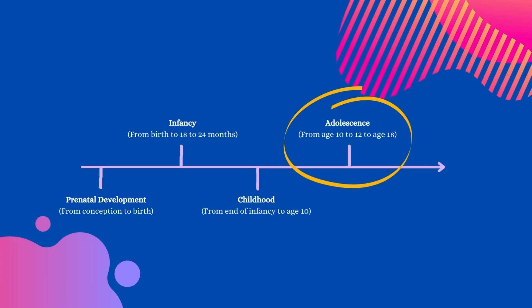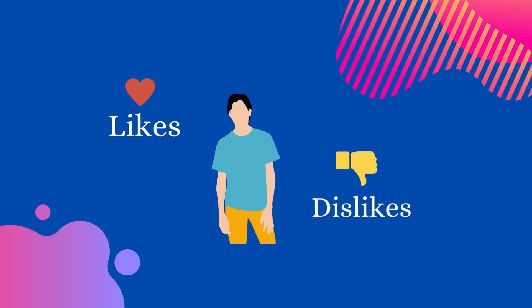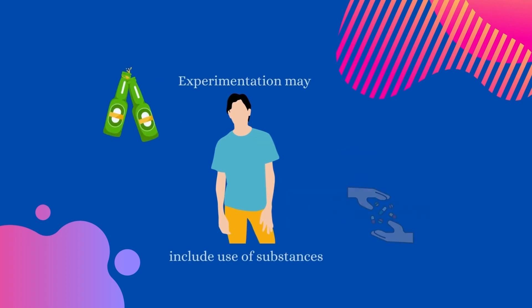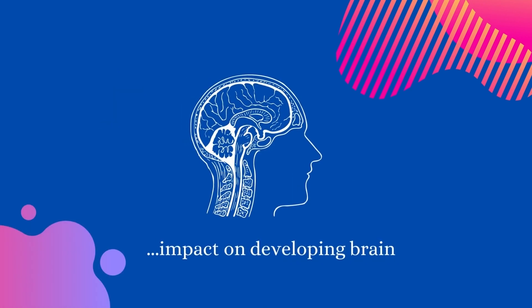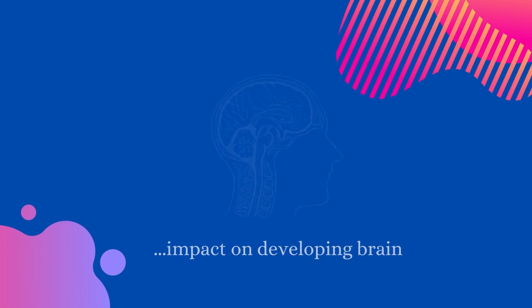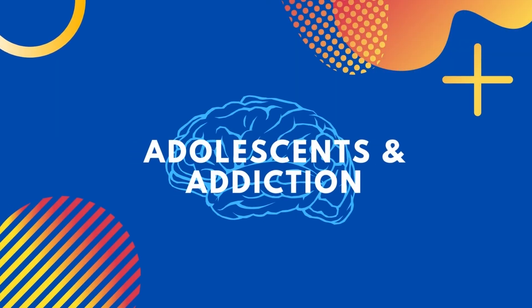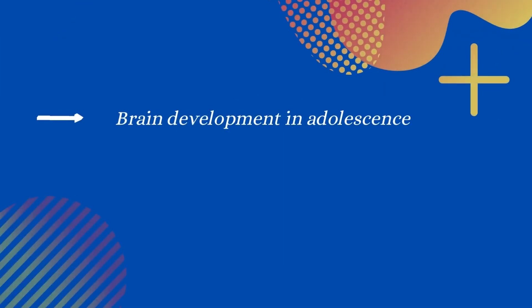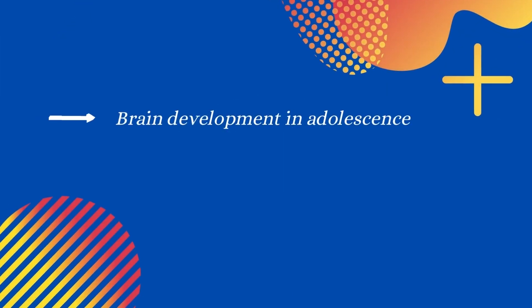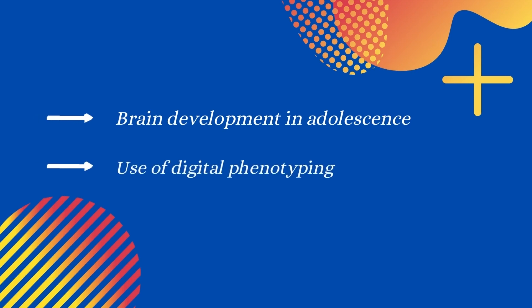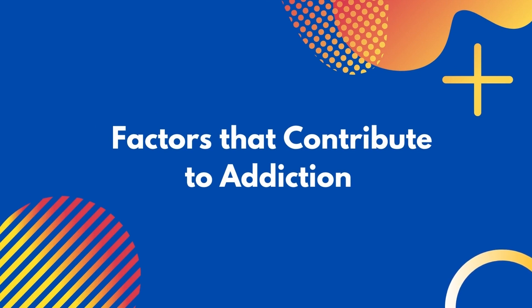At the developmental time period of adolescence, children start learning more about what they like, dislike, and how they fit in with their peers. This time in their lives is heavily influenced by experimentation, which may include the use of drugs and other illicit substances, putting them in harm's way and impacting their developing brain. This video aims to explain addiction in adolescence as presented by the National Institutes of Health Seminar on Brain Development in Adolescence and Addiction Risks and the Use of Digital Phenotyping to Predict Addictive Behaviors. Let's learn more about the factors that contribute to addictive behaviors.